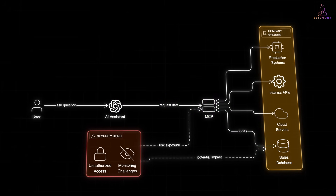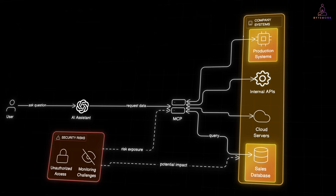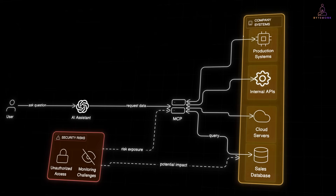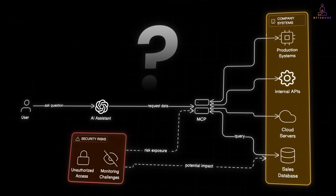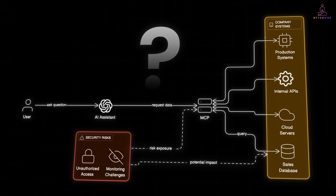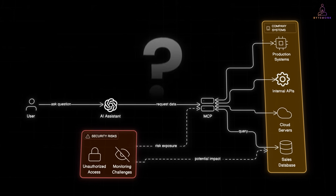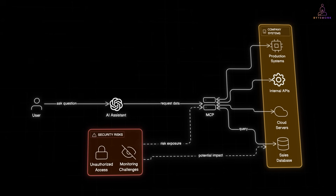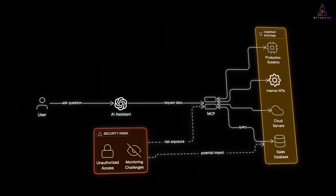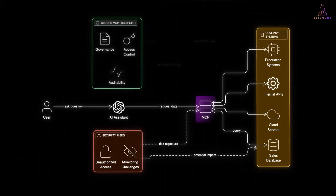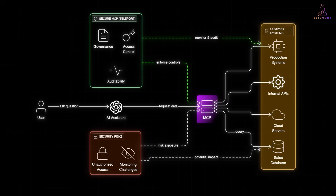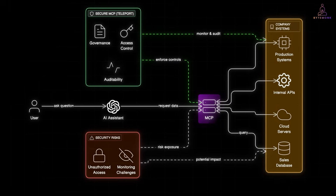But the moment an AI starts interacting with production systems — databases, cloud servers, APIs — the stakes go way up. Who is the AI really acting as? What exactly can it access? And how do we monitor or audit what it's doing? That's exactly what we will explore in this video: how MCP works, the security risks it introduces and how identity-first solutions like Teleport secure MCP, bringing the access control, governance and auditability you need for real enterprise use.